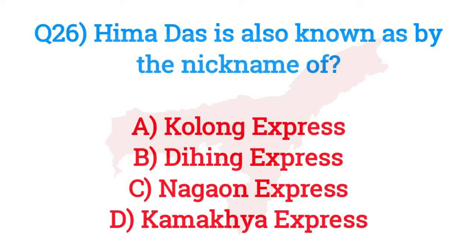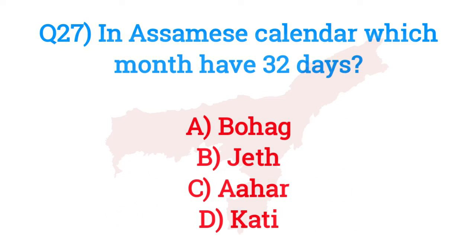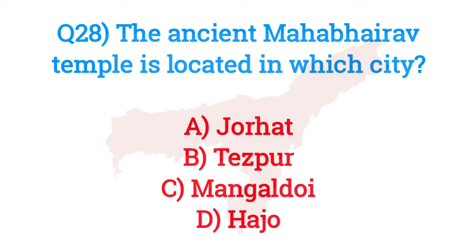Question number twenty-six: Hima Das is also known by the nickname? The answer is option B — Dhing Express. Question number twenty-seven: In the Assamese calendar, which month has 32 days? The answer is option C — Ahar.